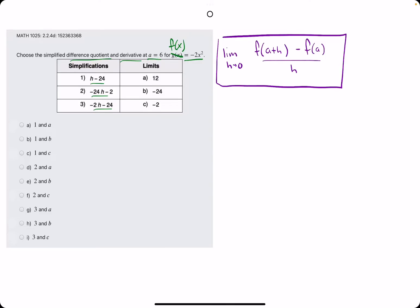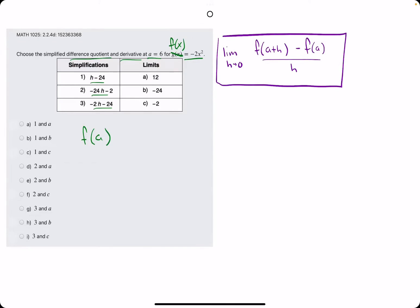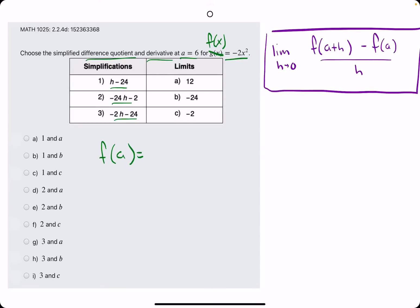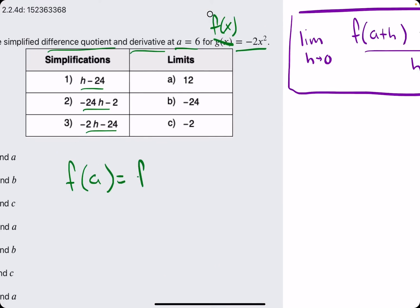Let's just start with that. To find the difference quotient, we want to start with finding f of a. So finding f of a is just to plug in the a value, which is 6, into the function they give us.